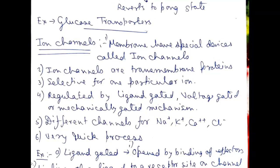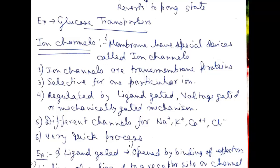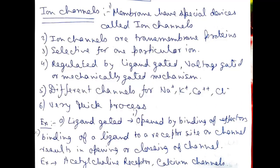Next are ion channels. Membranes have special devices called ion channels. Ion channels are transmembrane proteins. They are selective for one particular ion. They are regulated by ligand-gated, voltage-gated, or mechanically-gated mechanisms. Different channels include sodium channels, potassium channels, calcium channels, and chloride channels. It is a very quick process. An example of ligand-gated channels — they are opened by binding of a ligand to a receptor site on the channel, resulting in opening or closing of the channel. An example is acetylcholine receptors and calcium channels.